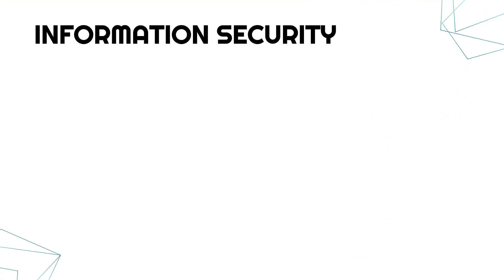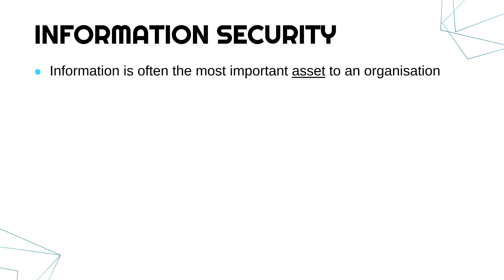Information security is about protecting information. Information is often the most important asset an organisation has. An asset is something which is useful to the organisation, and of course companies and people have loads of assets. Information is often crucial because it's often how the company works — it relies on that information every single day.